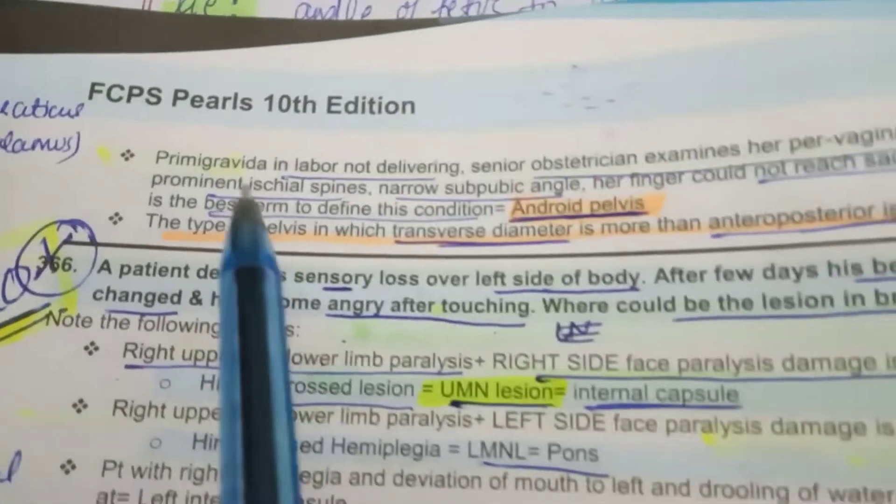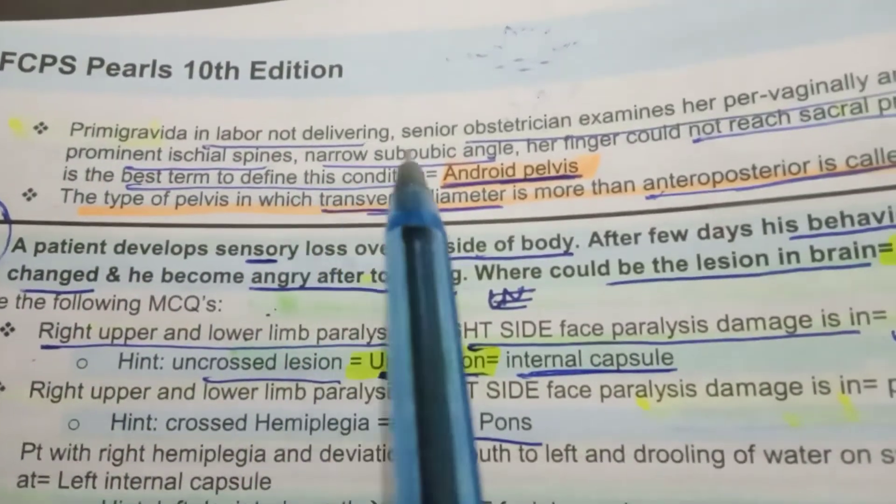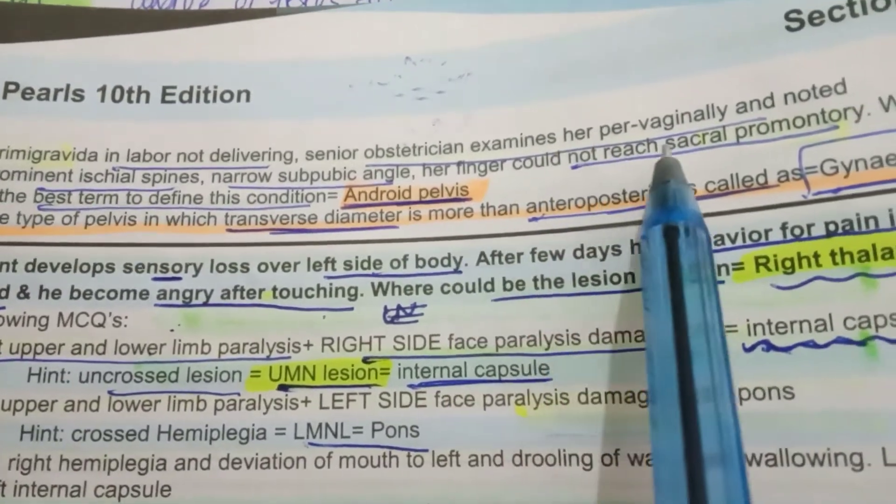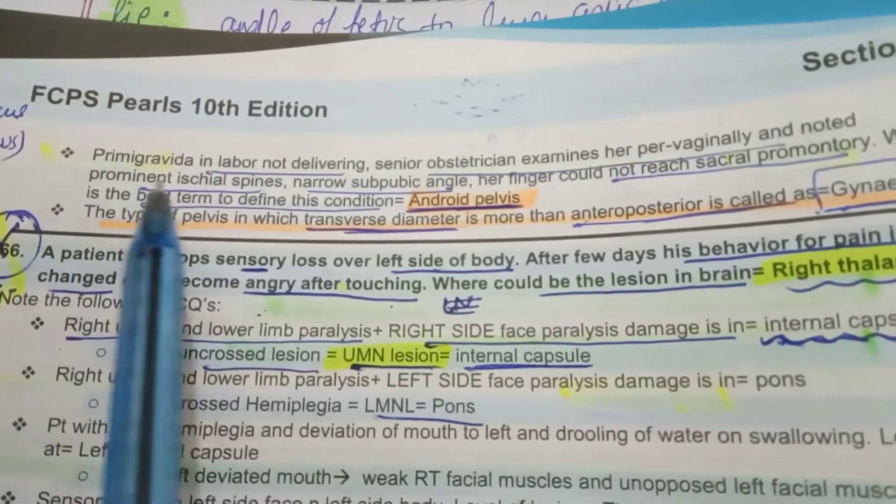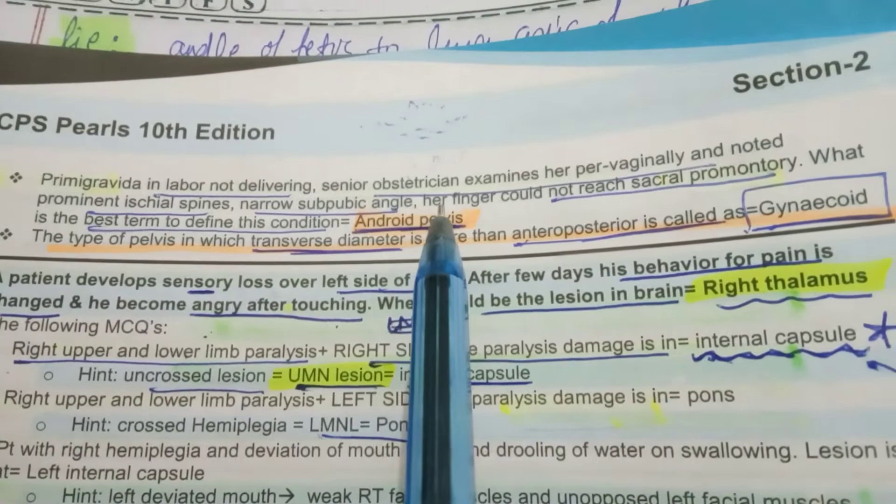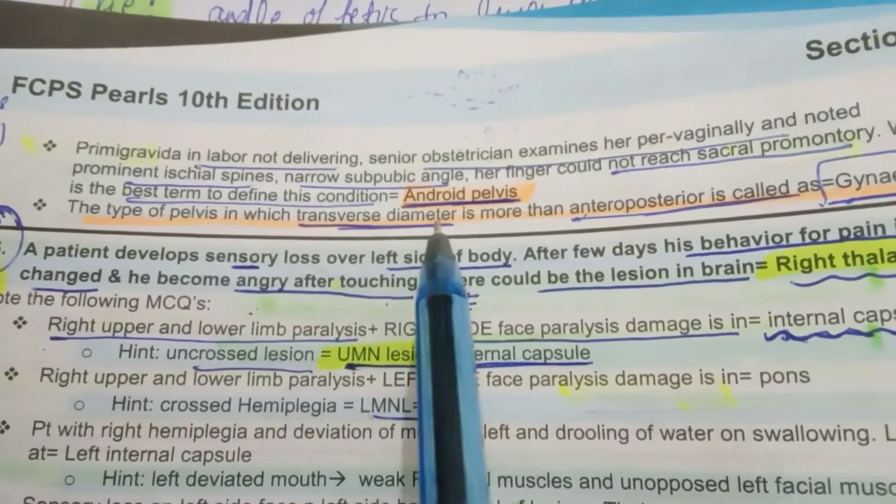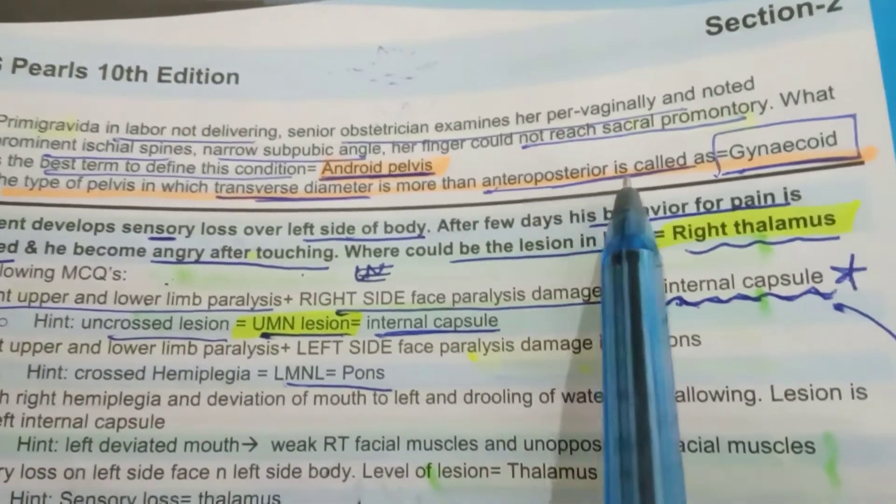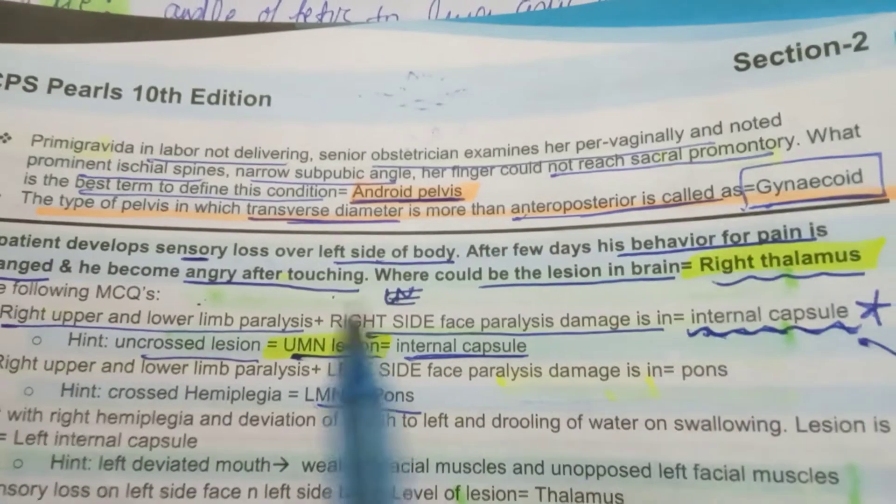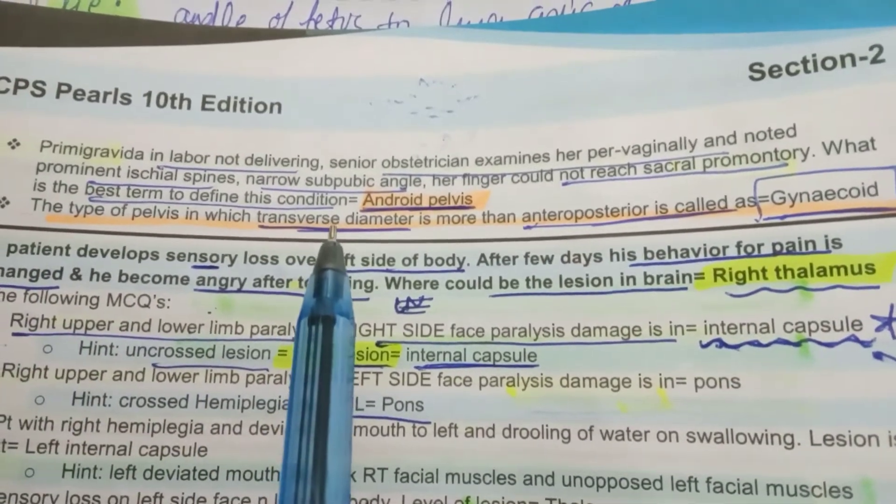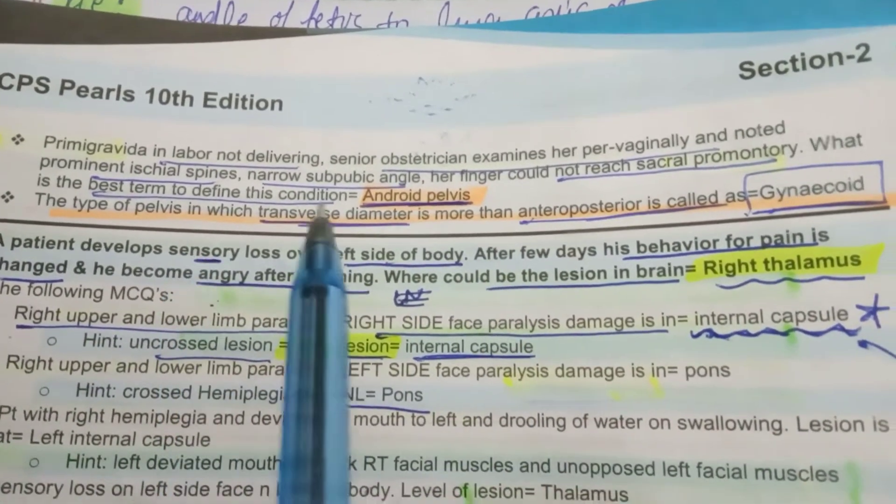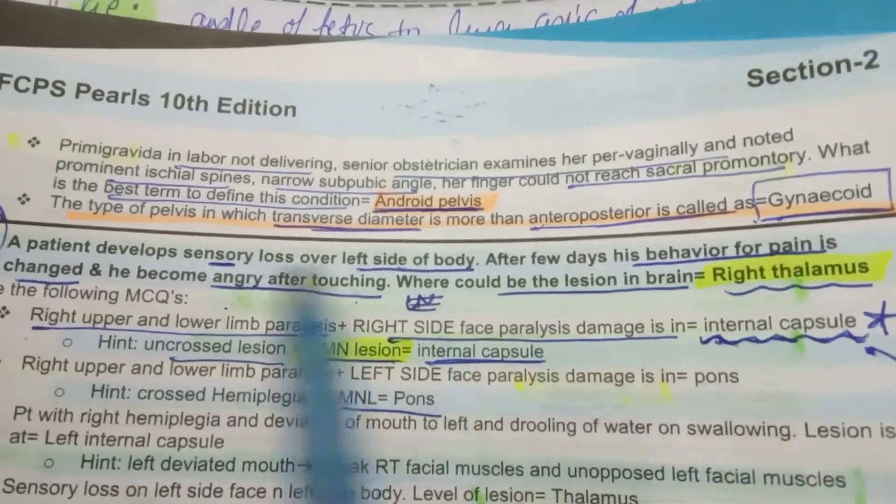We come to a primigravida in labor not delivering. Senior obstetrician examines her per vaginally and noted prominent ischial spines, narrow subpubic angle. Her finger could not reach sacral promontory. What is the best term to define this condition? Android pelvis. The type of pelvis in which transverse diameter is more than anterior posterior is called the gynecoid pelvis. It is the most common. Transverse is the most common, but the common and most favorable is the gynecoid pelvis. Having said all this, I want to cover three main aspects of the fetal positioning: Lie, and the fetal presentation, and the fetal positions.